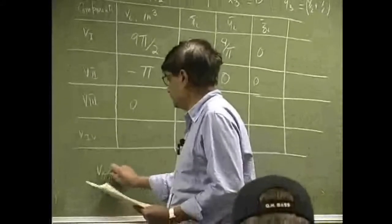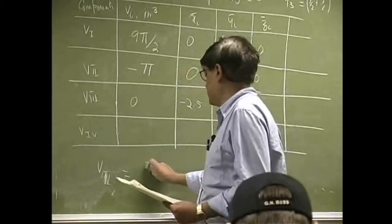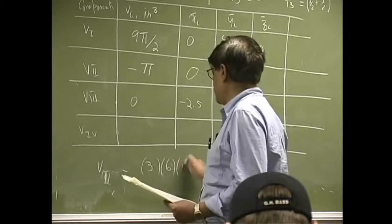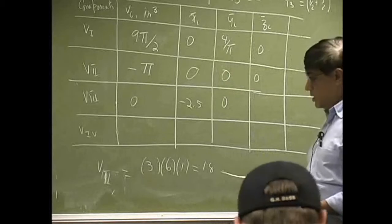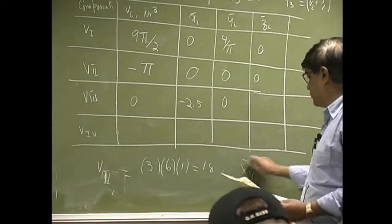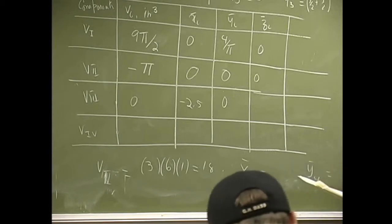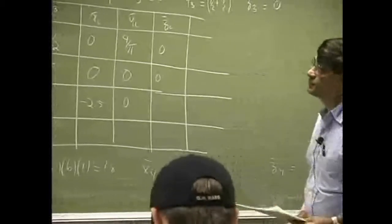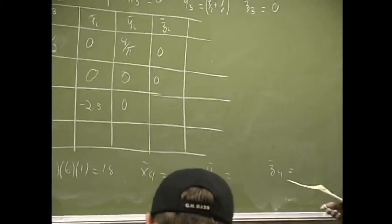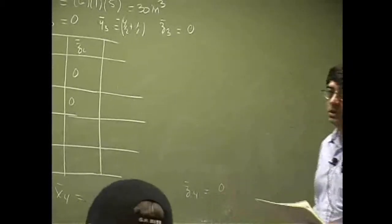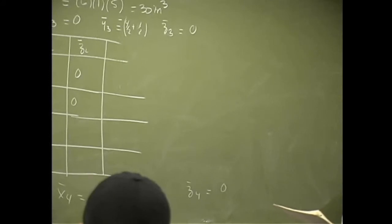That's the bottom plate. Again, it's going to be 3 times 6 times 1, or 18. We need x4 bar, you need y4 bar, and then you need z4 bar. So this goes to zero. How about the X and Y?